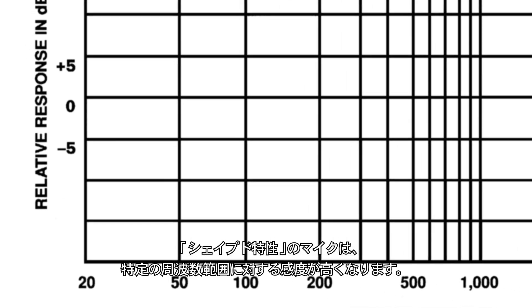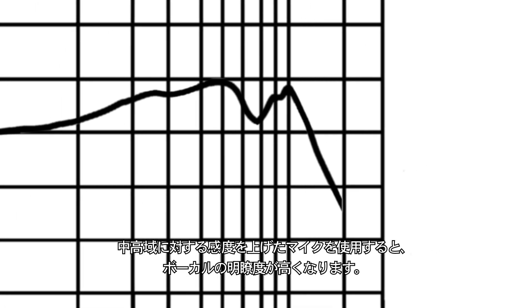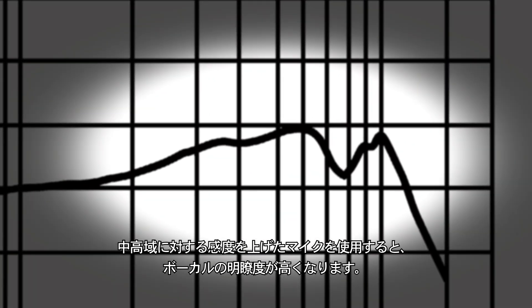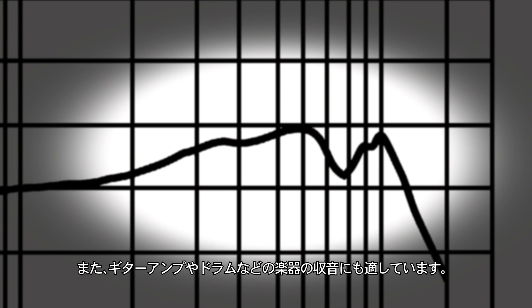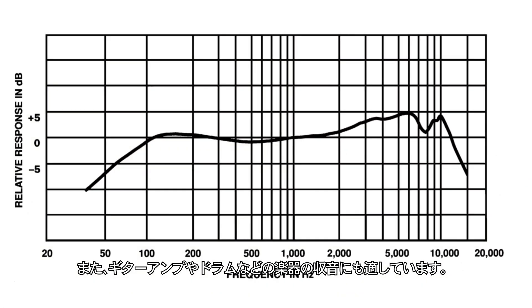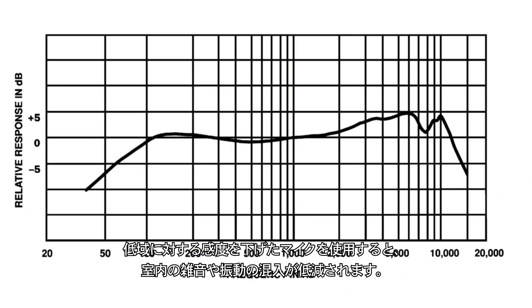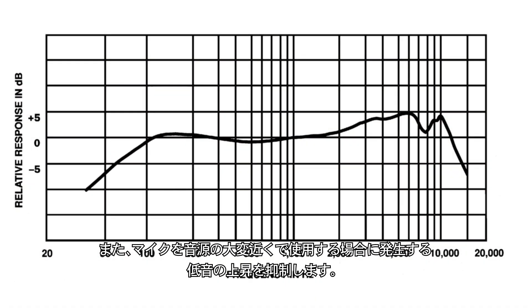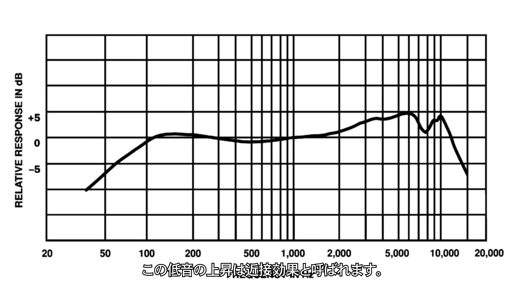A microphone with shaped response is more sensitive to some frequency ranges than others. A mic with increased sensitivity in the upper-mid range adds clarity to vocals and also works well on instruments like guitar amplifiers or drums. A mic with decreased sensitivity to low frequencies reduces pickup of room noise and vibration and counteracts the buildup of bass that can occur when the mic is used very close to the source, which is called proximity effect.